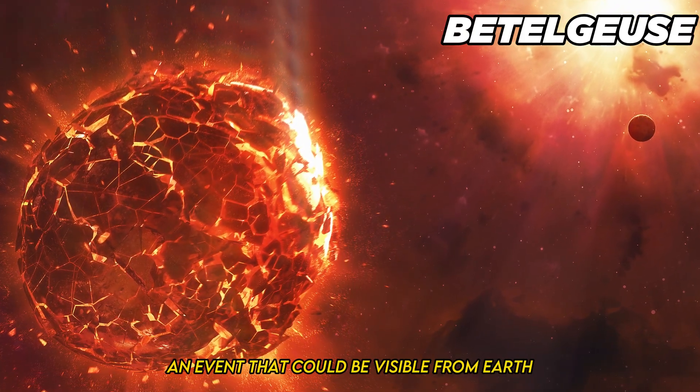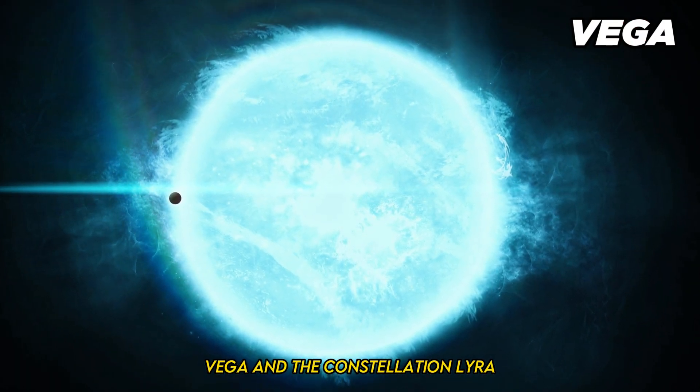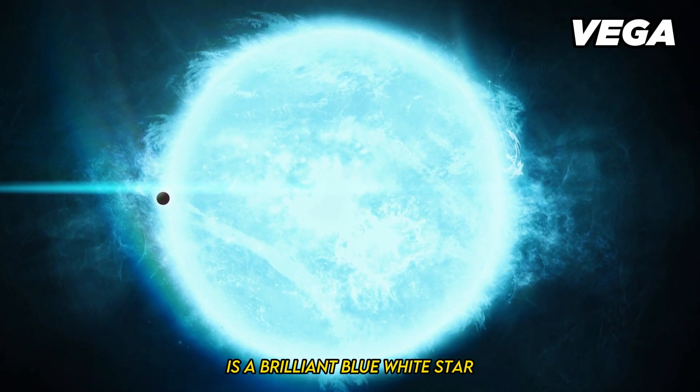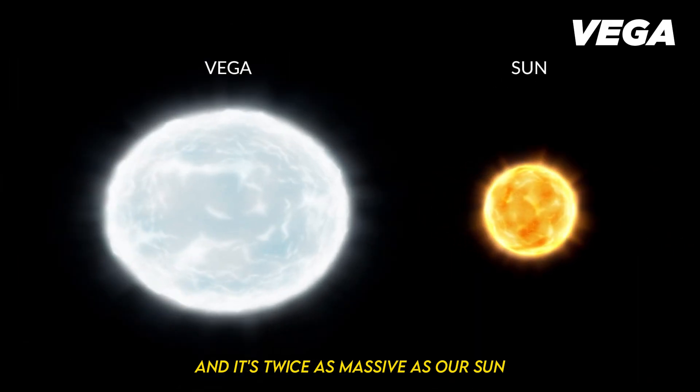On the other hand, Vega, in the constellation Lyra, is a brilliant blue-white star, and it's twice as massive as our sun.